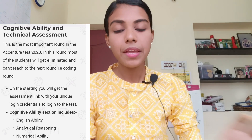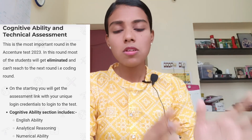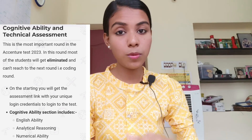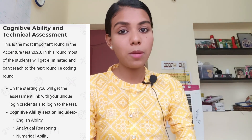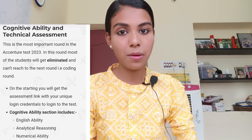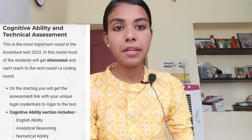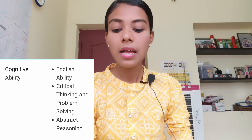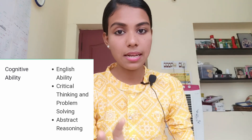If you meet the eligibility criteria, you can apply directly. The first round you will face is the Cognitive Ability round. In this round, questions will be asked on three topics: verbal ability in English, critical thinking and problem solving, and abstract reasoning. You need to be prepared on these topics to clear this round.